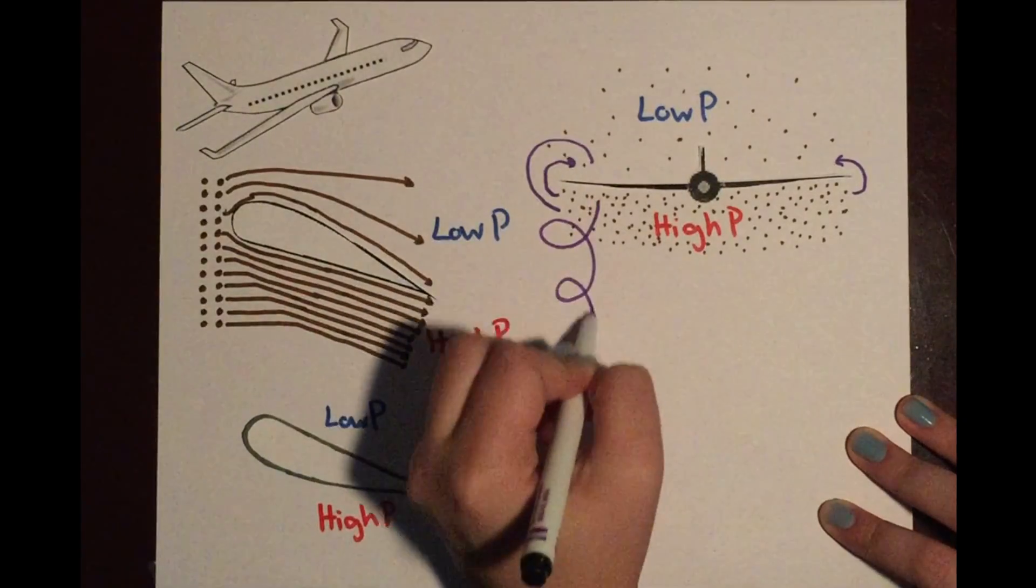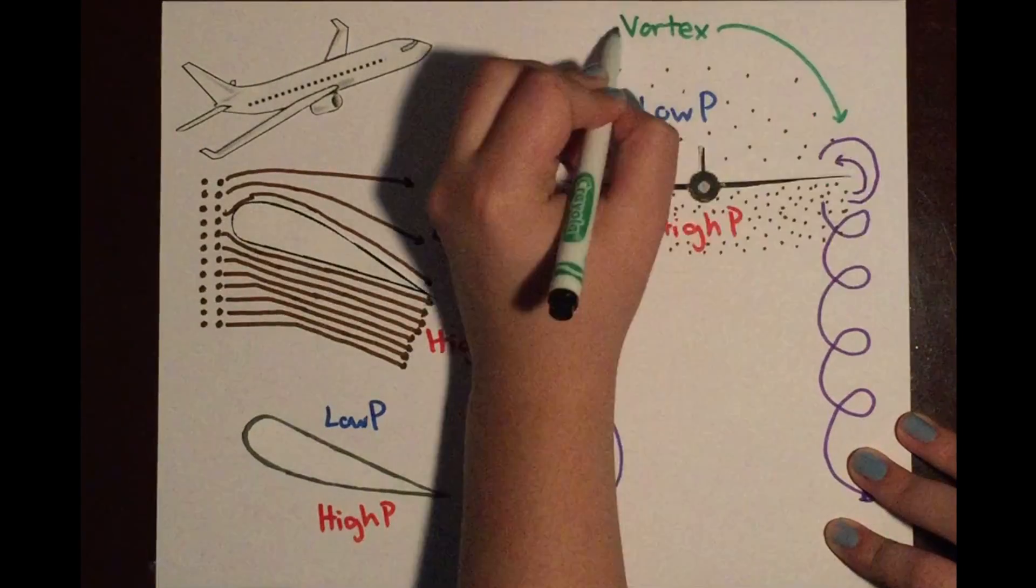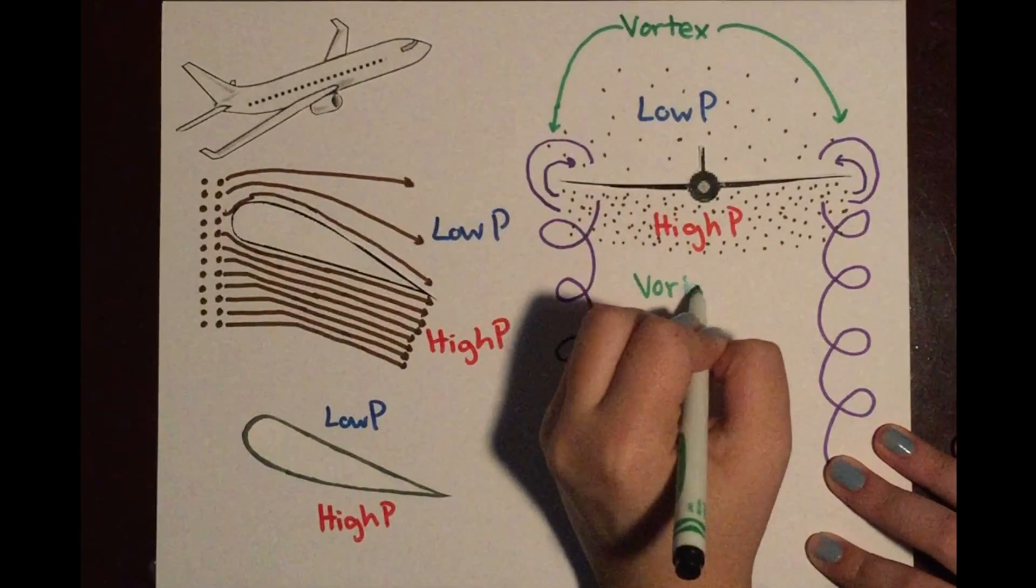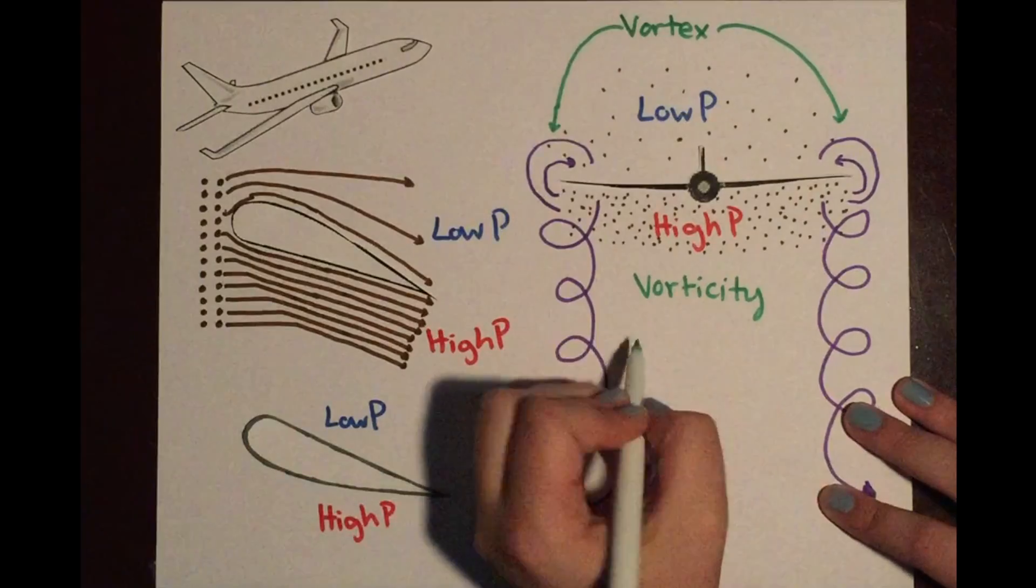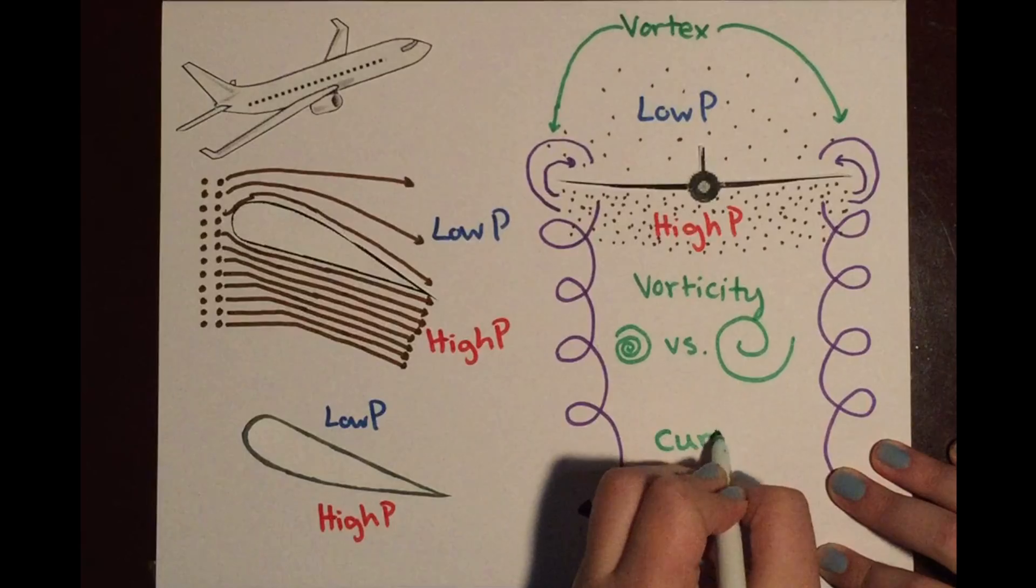As more and more particles move up and the plane moves forward, the particles create a spiral behind the tips of each wing called a vortex. But how can we measure the vorticity or the spiralliness of the vortex? First, we have to create a function that represents the vortex and then we have to find the curl of that vortex.